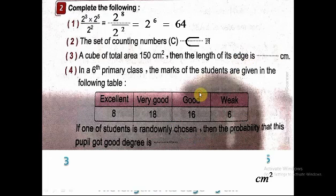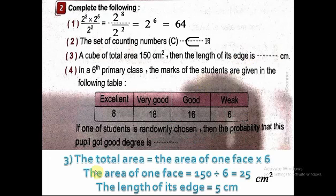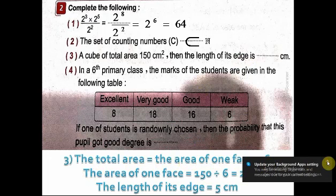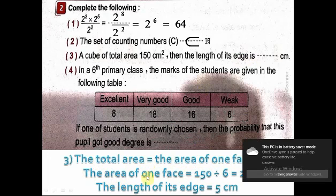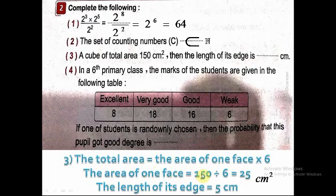Number 3: a cube has a total area of 150 square centimeters. The rule for total area is: total area equals the area of one face multiplied by 6, because a cube has six faces. So the area of one face equals 150 divided by 6, which is 25 square centimeters. The area of one face equals side length multiplied by itself — 5 times 5 equals 25 — so the length of its edge is 5 centimeters.